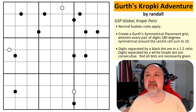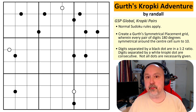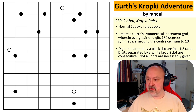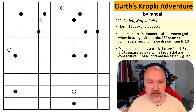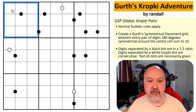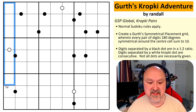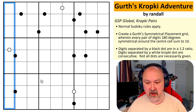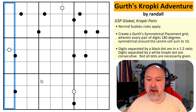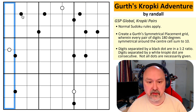Skilling Sudoku is still running, still working on caging constraints. Anyway, let's look at the puzzle — Girth's Crop Key Adventure by Randall. Normal sudoku rules apply: in every box, every row, and every column we must place the digits one to nine without repetition. I'm going to skip over the Girth's rule and quickly get the Crop Key stuff out of the way.